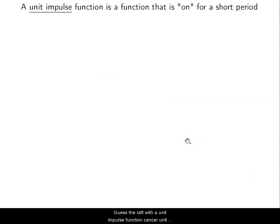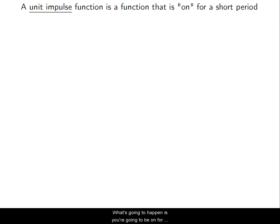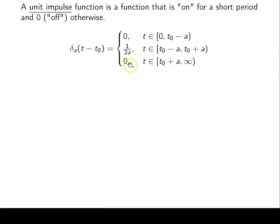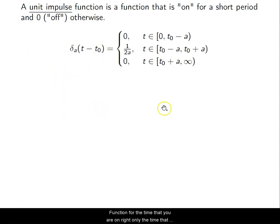We're going to start off with a unit impulse function. A unit impulse function is very similar to the Heaviside equation. What's going to happen is you're going to be on for a short period, instead of being off, then on, then having to be turned off. You're basically always off except for a short period of time, and this period of time will always give you an integral value of 1.